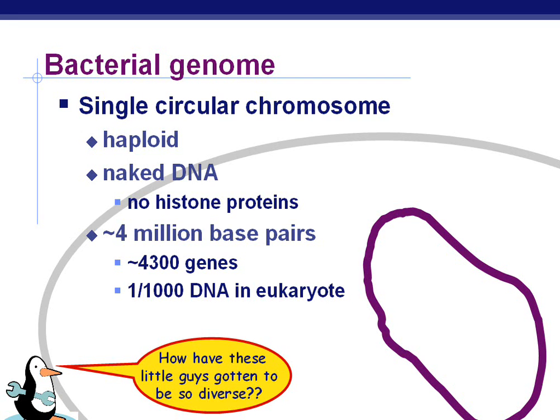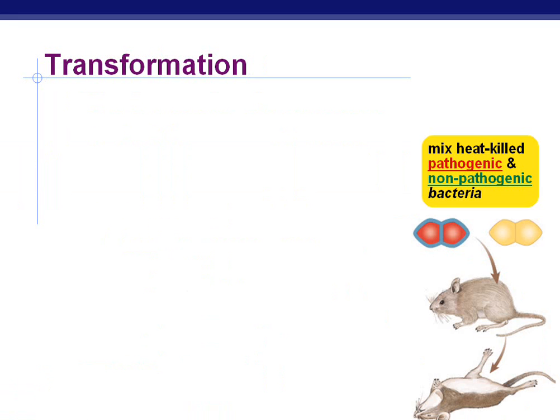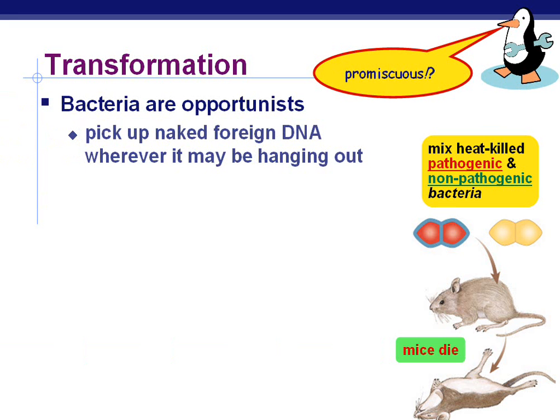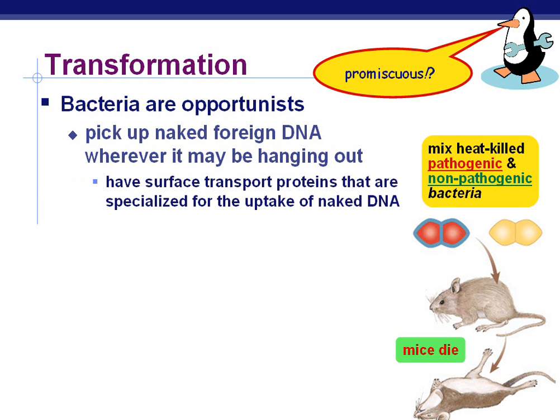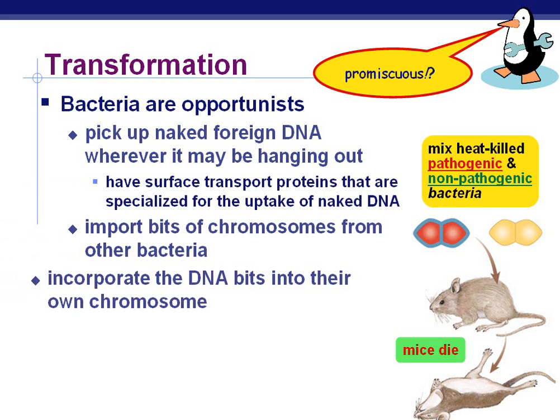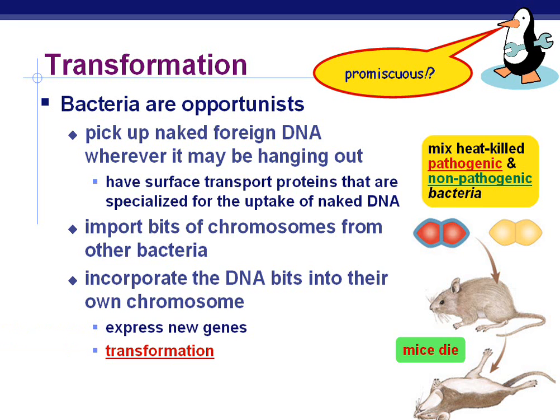Remember that transformation experiment where the heat-killed pathogenic bacteria and the non-pathogenic bacteria mixed — and the mice died. Bacteria are opportunists. They pick up naked foreign DNA wherever it may be. They have surface transport proteins that are specialized just for the uptake of naked DNA, importing bits of chromosomes from other bacteria. They can incorporate the DNA bits into their own chromosome, therefore expressing new genes. This is called transformation and is simply a form of recombination.